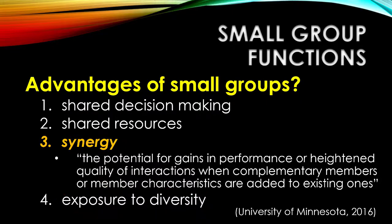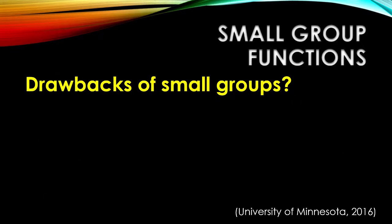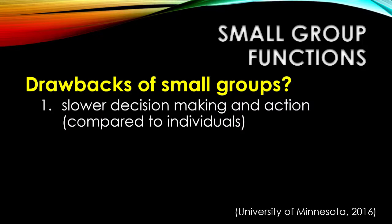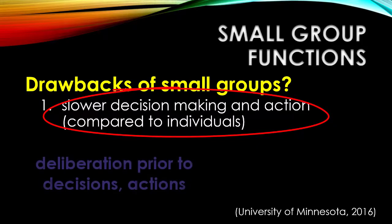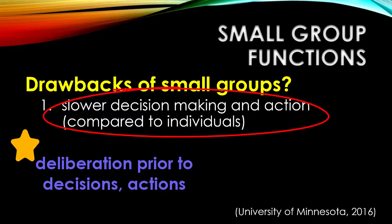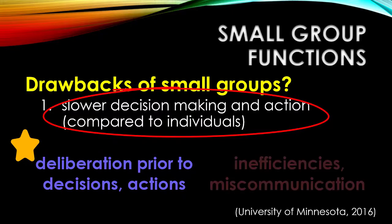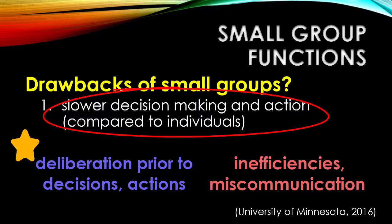We need to think about some drawbacks of small groups as well. Compared to individuals, small groups are going to make decisions and take action more slowly, in part because there's more deliberation and interaction that leads to the decision-making. Acting more slowly can be a good thing, but there's always the possibility for small groups to act in ways that are inefficient and counterproductive — slower decision-making and action that doesn't help you.